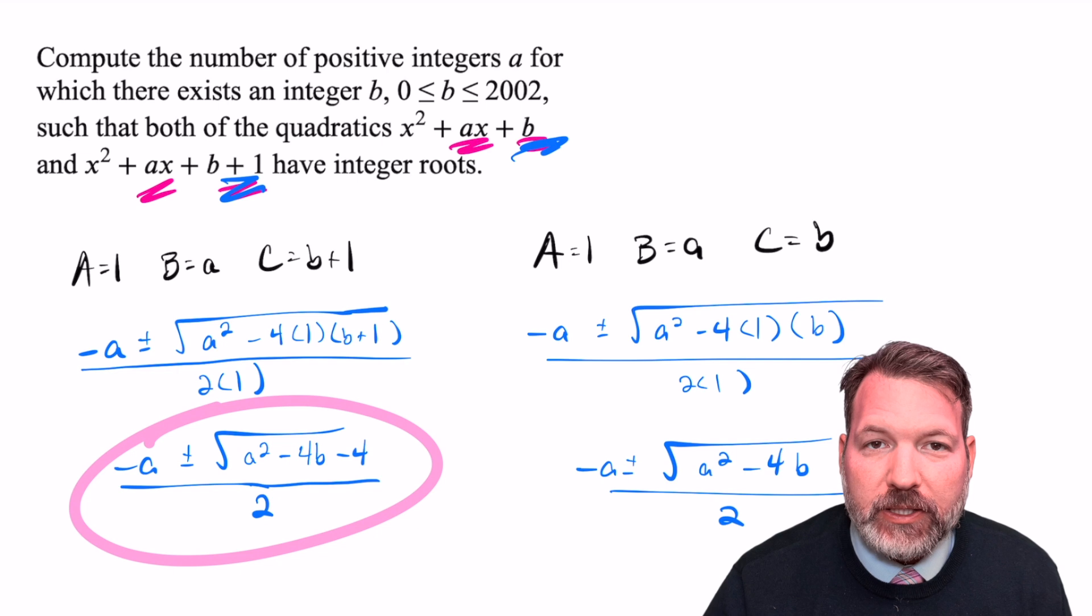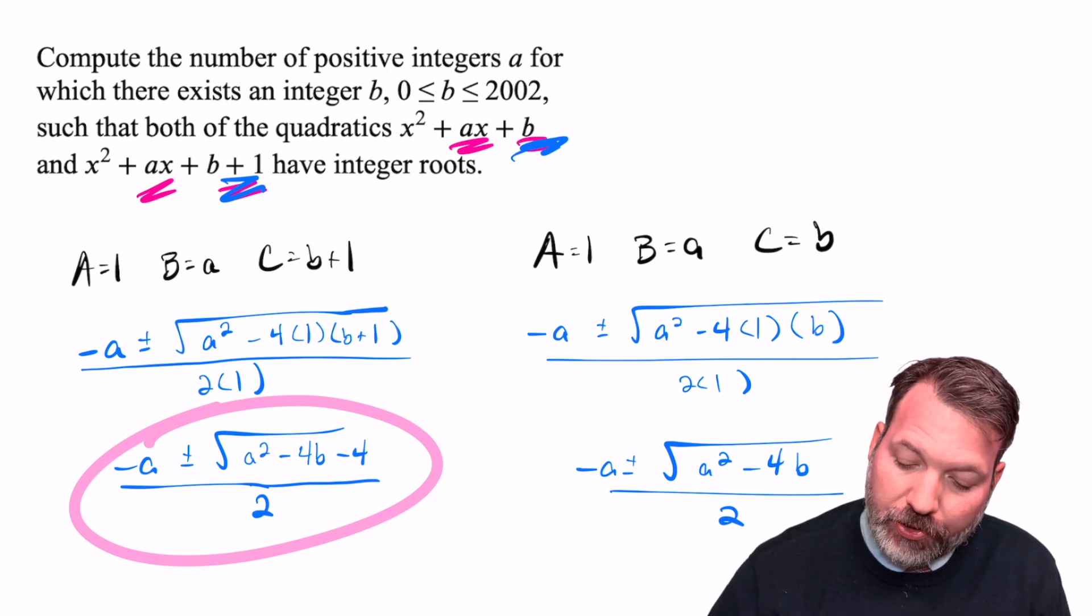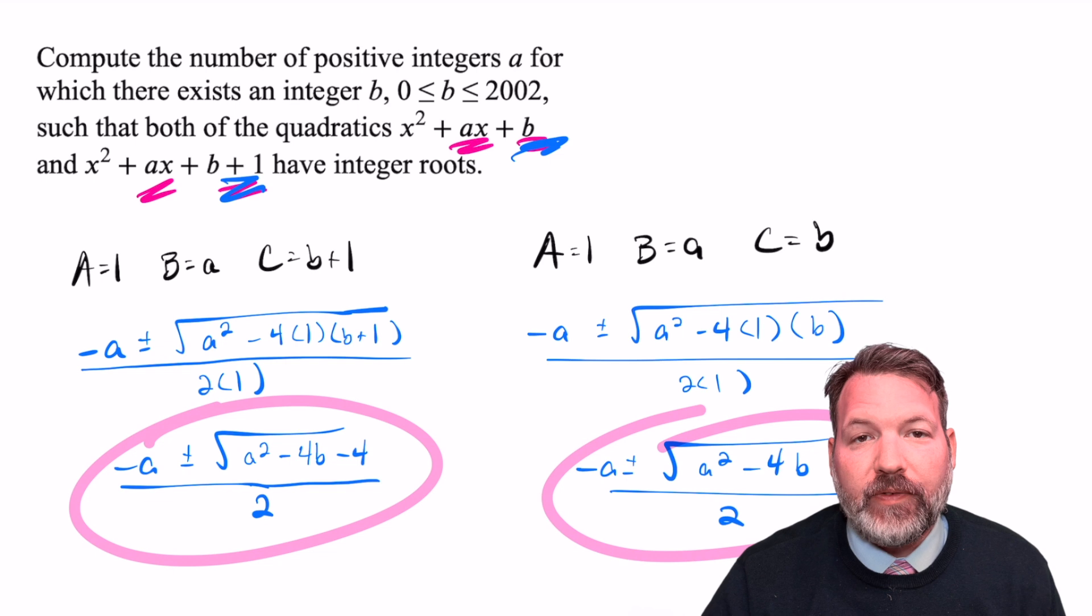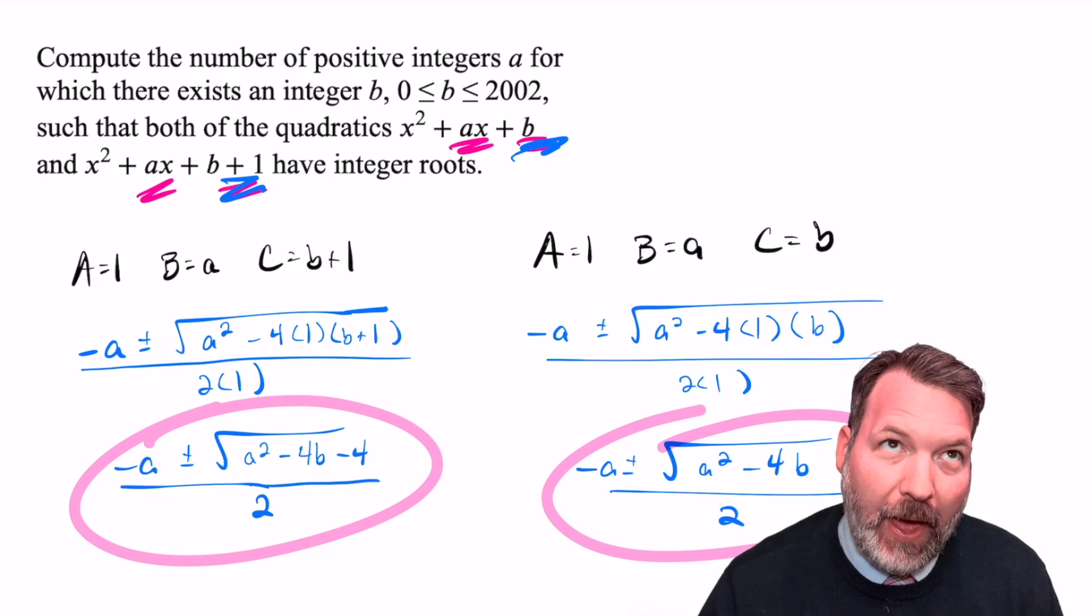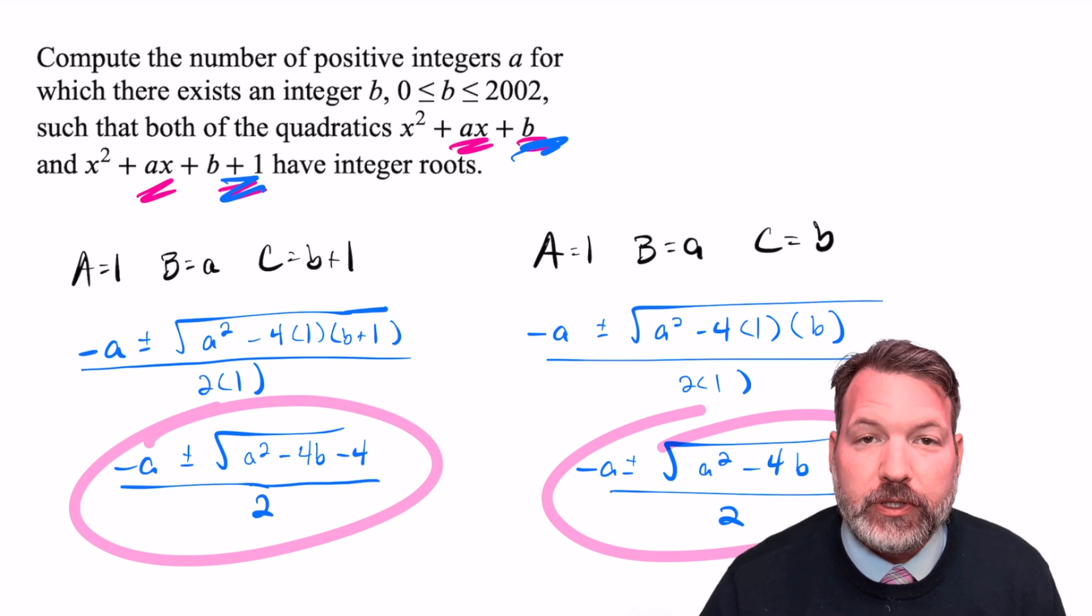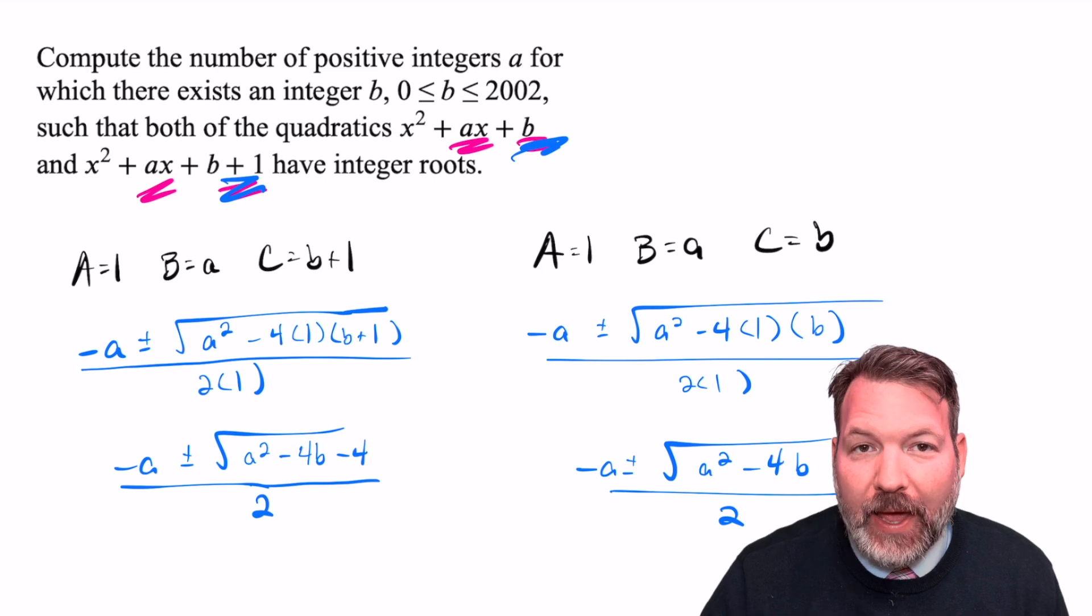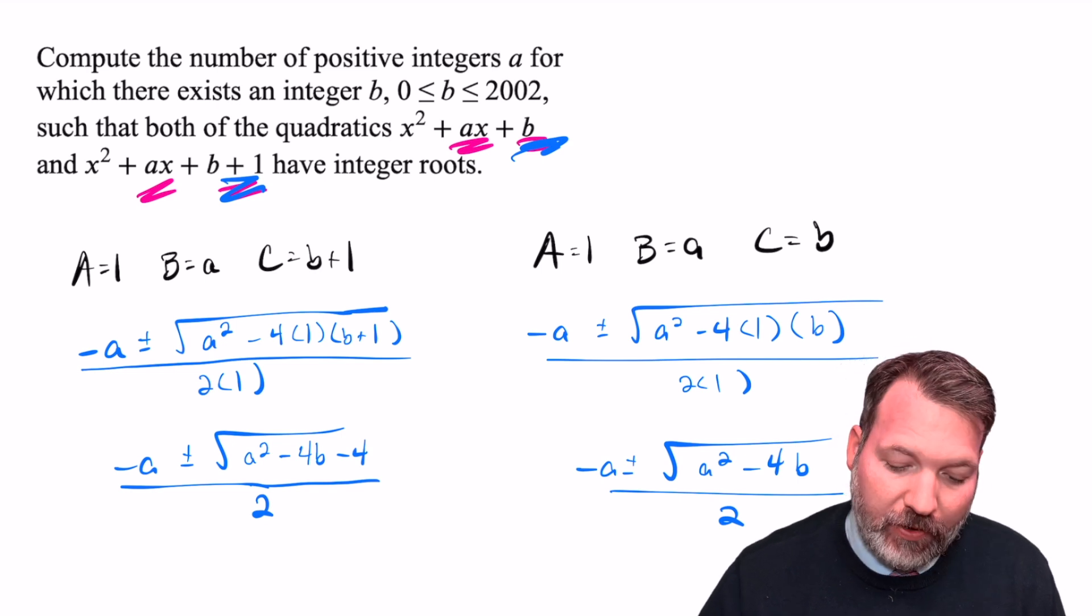And the roots of the B quadratic will be negative A plus or minus the square root of A² - 4B over 2. We can now get a better sense of why A ended up needing to be an even number.